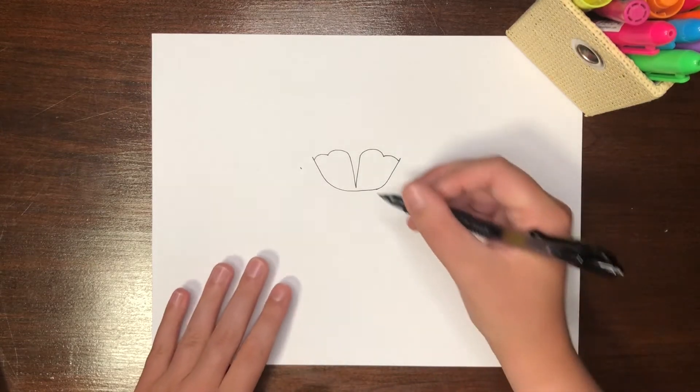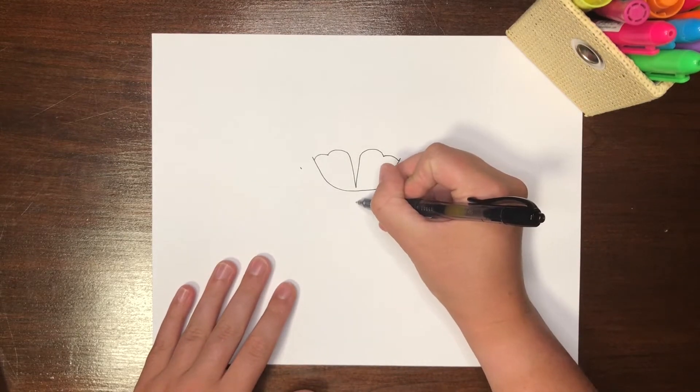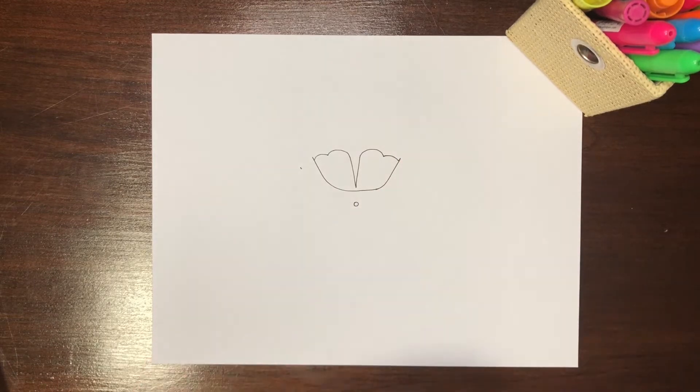Below the apex of the U, we can draw a small circle which resembles the central canal of the spinal cord.